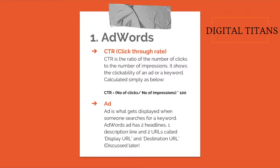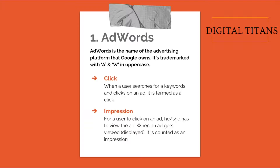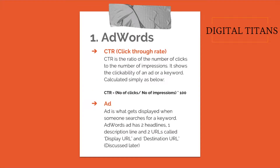Next is CTR, or click-through rate. When a user searches for a keyword on Google and an ad is shown, that is an impression; if they click on the ad, that is a click. CTR is the ratio of the number of clicks to the number of impressions — it shows the clickability of an ad or keyword. For example, if 1,000 people saw your ad and 10 clicked, CTR is calculated as clicks divided by impressions, multiplied by 100. The AdWords system calculates CTR automatically.